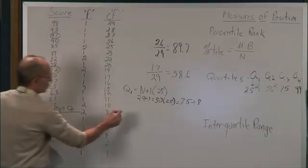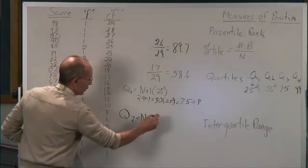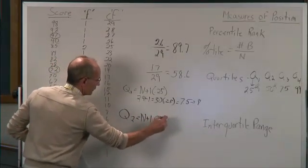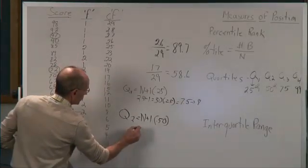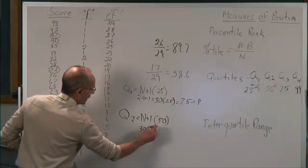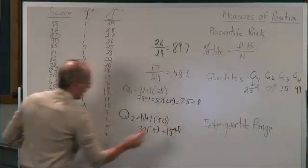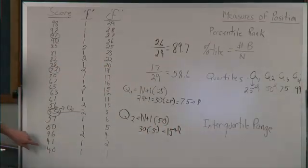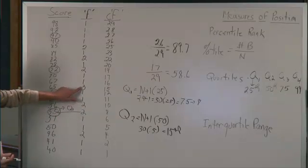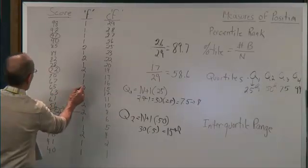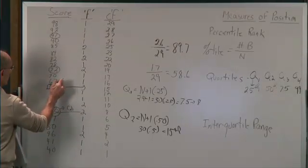To get the second quartile, we take N plus 1 and multiply by 0.50. The second quartile is also the same as the median. In this case, 30 times 0.5 gives us 15, so the 15th score from the bottom is the second quartile. Counting up to the 15th score, our median or second quartile is a score of 65.